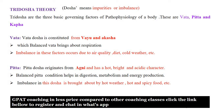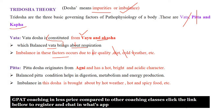The three Dosha theory: Dosha means impurities or imbalance. According to Ayurveda, we have three Doshas — Vata, Pitha, and Kapha. Whenever there is imbalance in Vata, Pitha, or Kapha, we get disease. Vata Dosha is constituted from Vayu or Akash, meaning air, and governs respiration. Imbalance in Vata causes respiratory problems, brought about by poor air quality, diet, or cold weather.